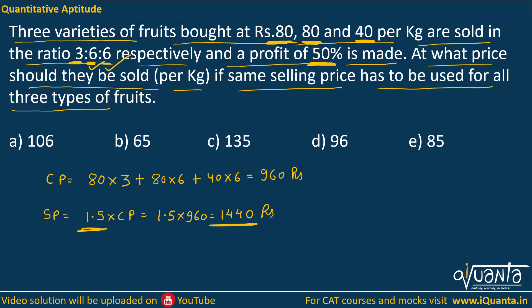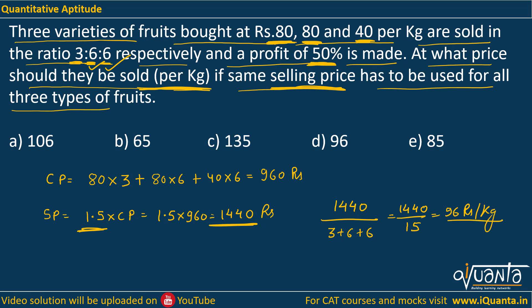Now we have been asked at what price should they be sold per kg if the same selling price is used for all three types of fruits. Since all fruits must have the same selling price, we divide the total selling price by the total weight. The total weight is 3 + 6 + 6 = 15 kg. So 1440 ÷ 15 gives 96 rupees per kg.